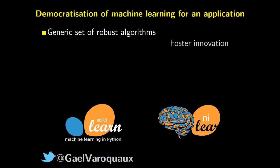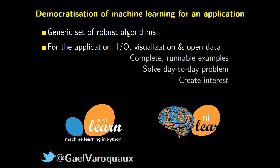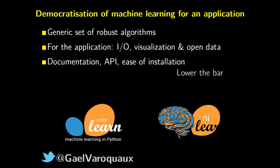To conclude, one of my goals is to democratize machine learning for medical imaging and other applications. The first thing we need is a generic set of robust algorithms — I tend not to talk about very fancy things because what we find is that people don't need fancy things, they need classic things that are extremely robust. Then for a given application you need to worry about IO, visualization, and open data. From this, it's really useful to build a complete set of runnable examples and check whether they solve day-to-day problems. Work on your library and your examples until people look at them and go 'this is what I want' — that's when you've created an interest. On top of this, worry about documentation, API, and ease of installation to lower the bar. Thank you.